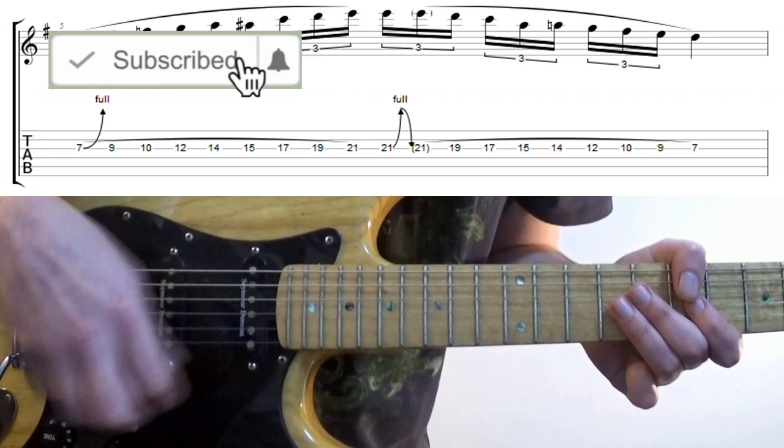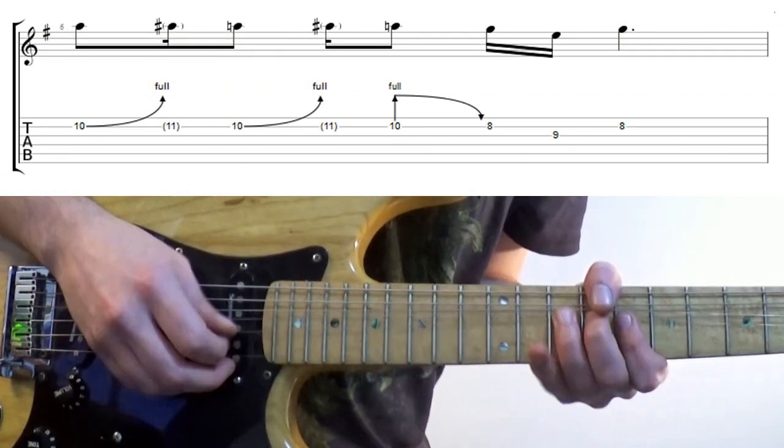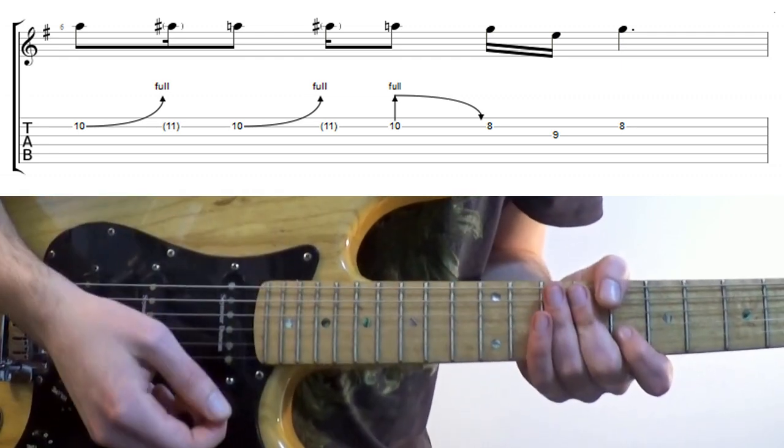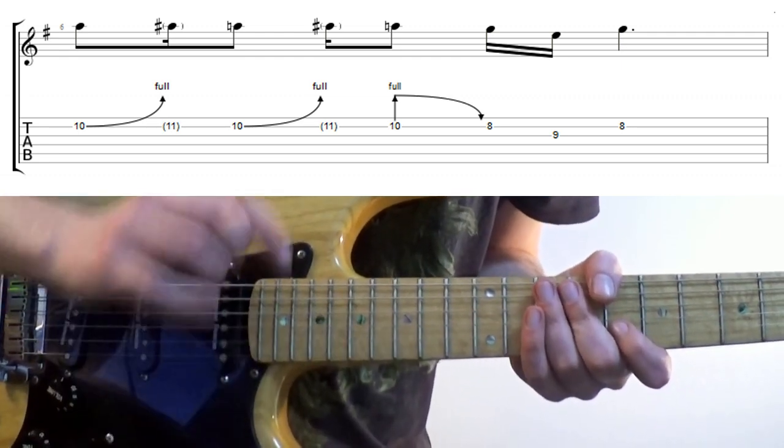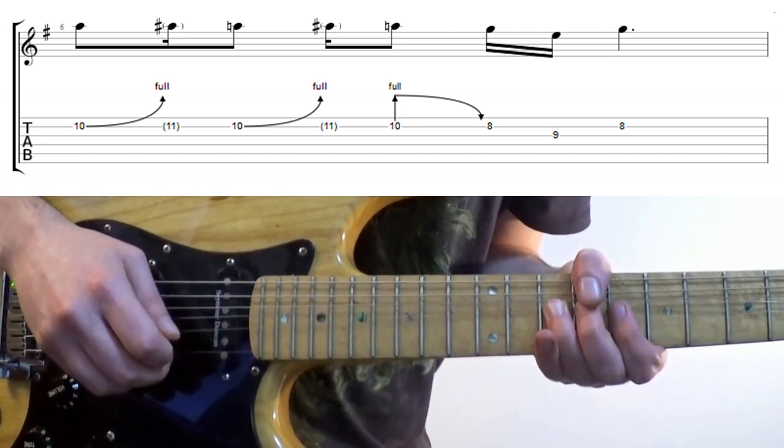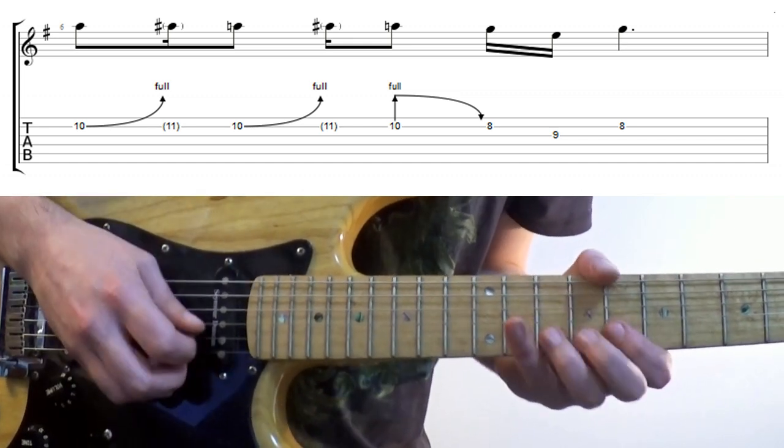So if we use that first note from our Phrygian example, we can get an Andy Timmons or Guthrie Govan style lick. Click the lesson card on the top right if you want to learn some more tasty, bendy Guthrie Govan licks. So this bend goes up to the fifth, the finger action suggests a flat 6, a tense but cool interval over the E minor.